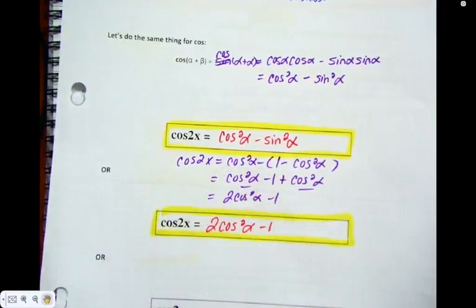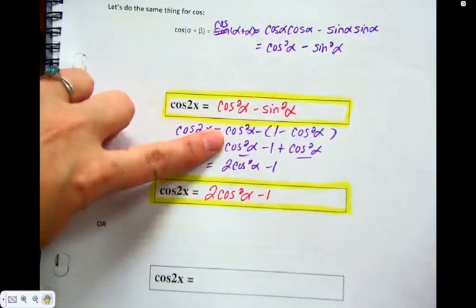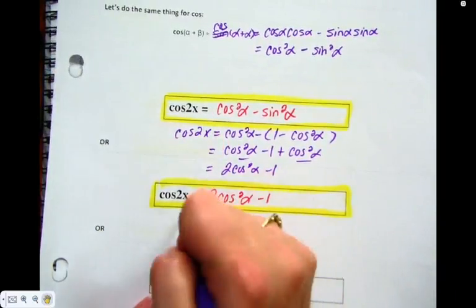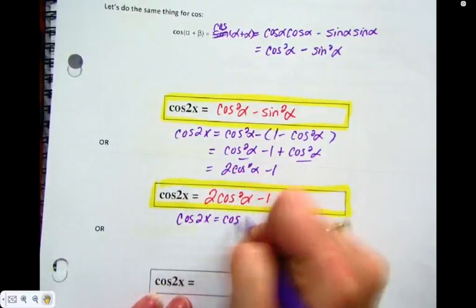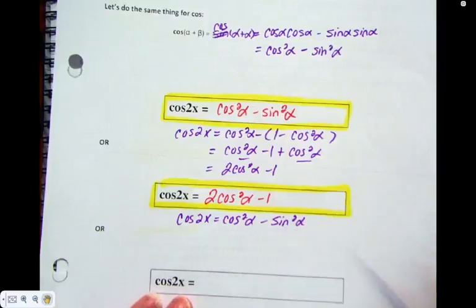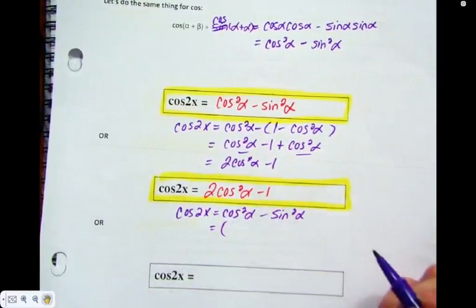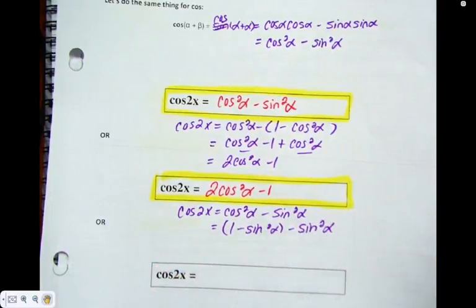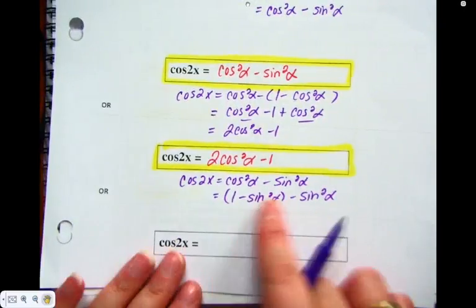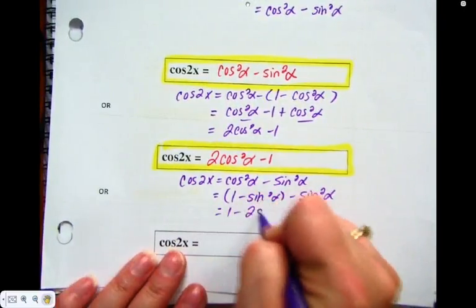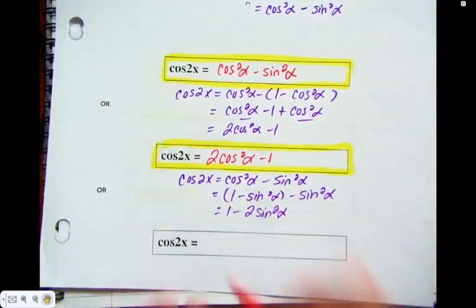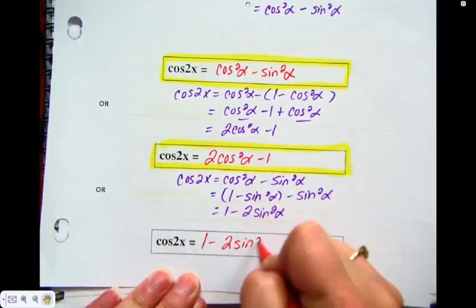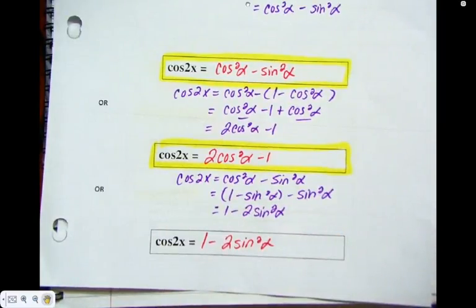If you want to, pause the video and add that to your cue cards. But wait, of course there's a third formula. I'm going to do exactly what we did before, except this time I'm going to replace the cos squared. Going back to our first formula — cos squared alpha minus sine squared alpha — this time I'll take the cos squared and replace it with 1 minus sine squared alpha. Collecting like terms gives me 1 minus 2 sine squared alpha. That's our third formula. Pause the video and add that to your cue card.